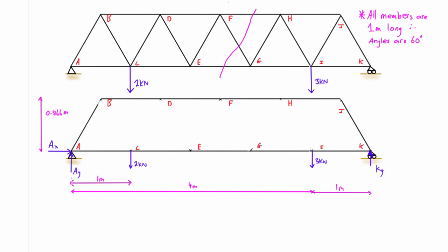Alright, so now let's take the sum of forces in the x direction. There is only one force in the x direction so when we set the sum of forces in x equal to 0, we only have that one force that's Ax so Ax is just equal to 0.